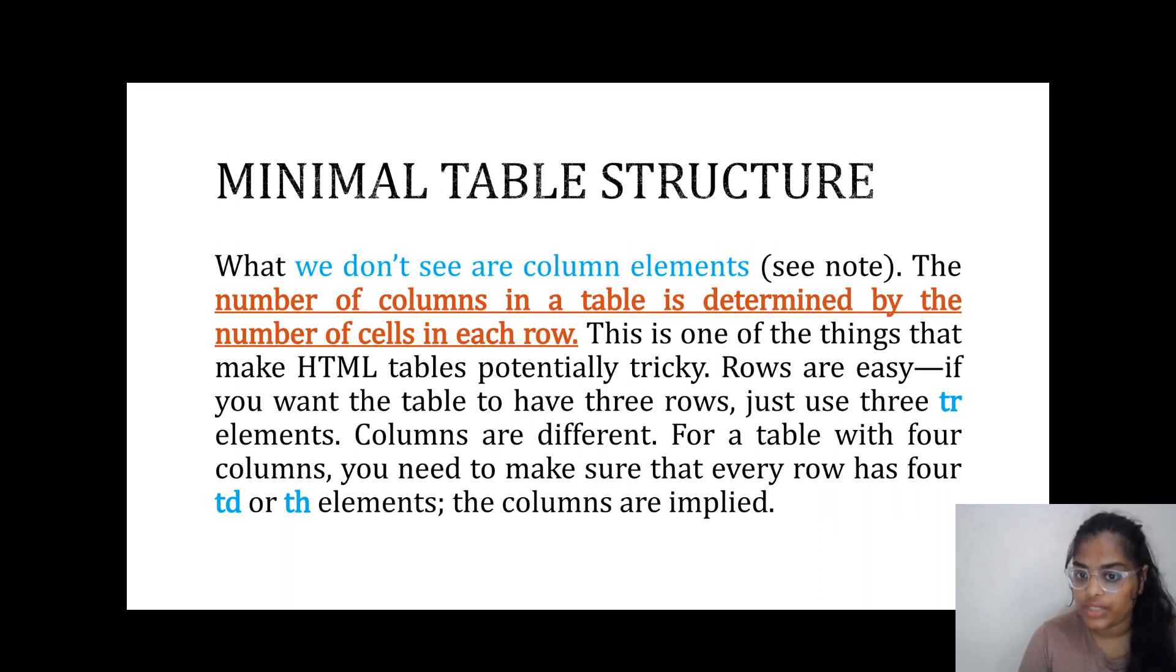Rows are easy. If you want the table to have three rows, just use three TR elements. Columns are different. For a table with four columns, you need to make sure that every row has four TD or TH elements. The columns are implied.